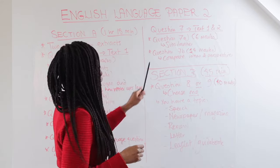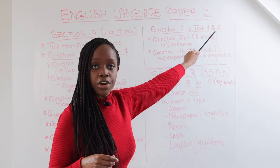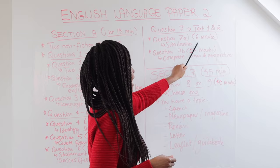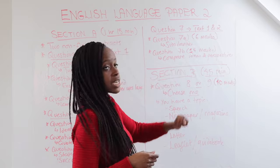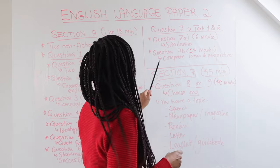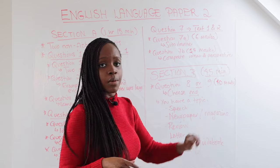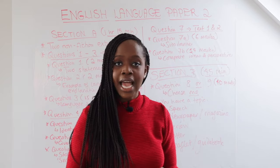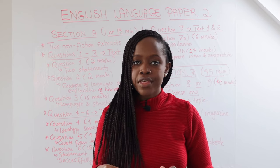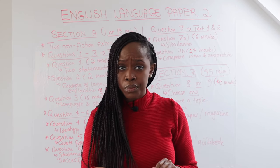Question seven refers to both text one and text two — these are the comparison questions. Question seven A is worth six marks, and here you're looking for similarities between the two texts. Question seven B is worth 14 marks, and here you are comparing ideas and perspectives, supporting your comparisons with reference to language and structure. I will show you how to do so.